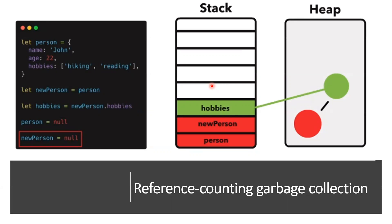Garbage collection means removing memory from the heap that we no longer use — no longer needed objects and functions are removed from the heap. We have algorithms for this. The first is the reference counting garbage collection algorithm. We have a person object, and inside it we have a hobbies array. Arrays are also objects in JavaScript, so this person object points to hobbies.